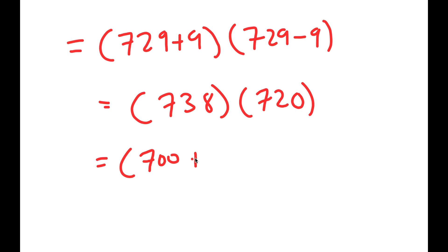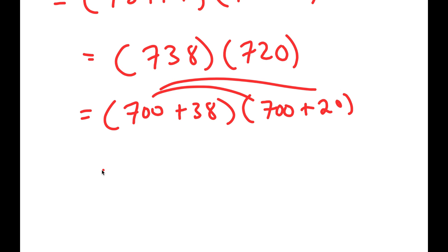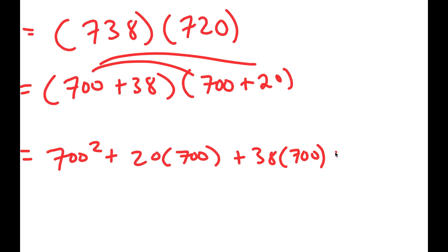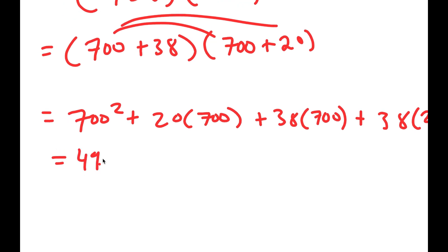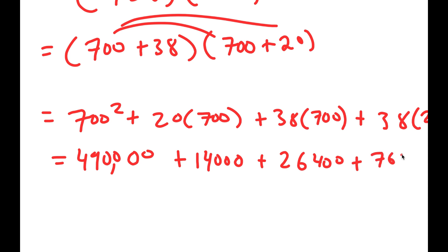This is the same thing as (700 + 38) times (700 + 20), and I rewrite it this way to make multiplication easier. Expanding, I get 700 squared plus 20 times 700 plus 38 times 700 plus 38 times 20. So 700 squared is 490,000; plus 14,000; plus 26,600; and plus 760.